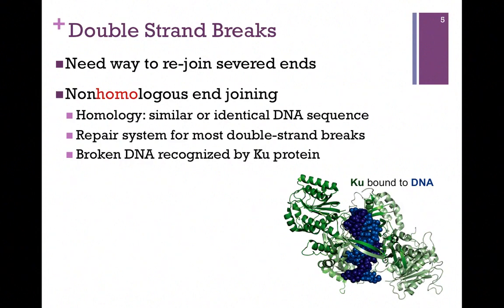There are two ways in which this can occur. The first is called non-homologous end joining. Homology refers to the fact that there are two or more DNA sequences that are similar or nearly identical in terms of their sequence. In this case, we're joining together ends that are not homologous, not similar. It's a repair system that works for most of our double-strand breaks.